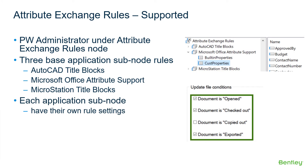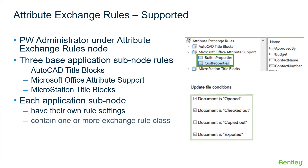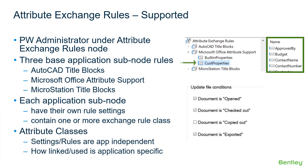Each supported application Exchange node contains its own rule settings for when to exchange attribute data during open, checked out, copied out, or exported. The application subnode can contain one or more named rules. The application-specific named exchange rule is referred to in this course as Attribute Classes. Attribute Classes is simply the list of attribute bindings that map the ProjectWise metadata to the application object metadata. The method of adjusting rule settings and creation of attribute classes is the same regardless of the application node type; however, the application stores, accesses, and processes the data exchange in unique ways per application.